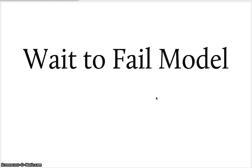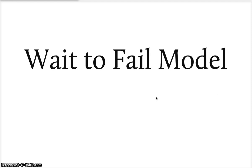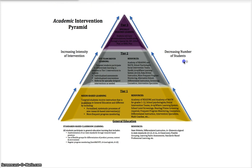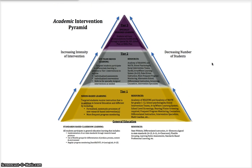The problem is we could wait years for this to occur, with the student falling further and further behind. We make that identification, and then if there is that discrepancy, it's usually a specific learning disability that's the cause of it. So in moving away from the waiting-to-fail model, we move towards RTI. In RTI, we talk about an academic intervention pyramid.